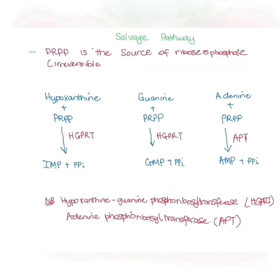Now let's look at another pathway called the salvage pathway. If a purine is degraded, it forms free bases, and these free bases can be used to produce nucleosides. PRPP is the source of the ribose-5-phosphate, and this reaction is irreversible. Hypoxanthine plus PRPP in the presence of HGPRT produces IMP. Guanine plus PRPP in the presence of the same enzyme forms GMP. Adenine plus PRPP requires a new enzyme called APT, and this forms AMP.